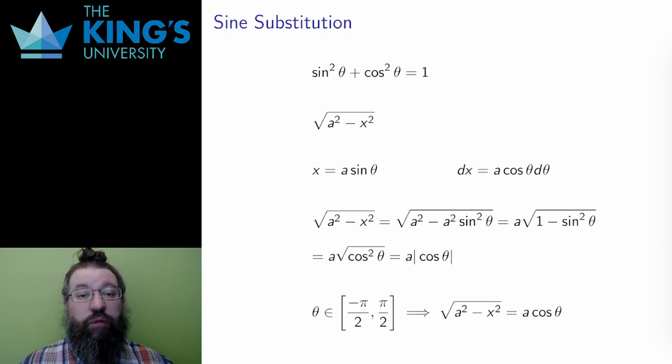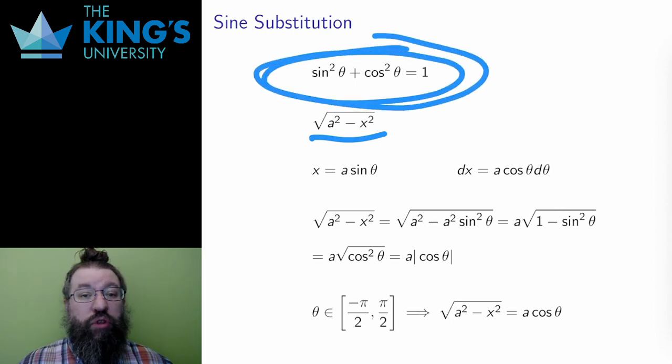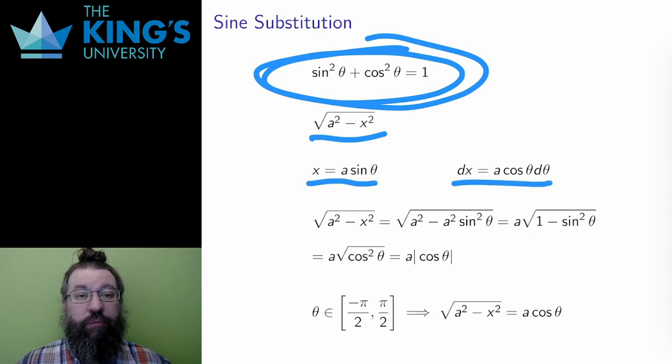So let me start with the first type, the square root of a squared minus x squared. The substitution here will be based on the trig identity sine squared plus cosine squared equals one. This is the identity that will help get rid of the square root. The substitution is x equals a sine theta, so that dx is a cosine theta d theta.